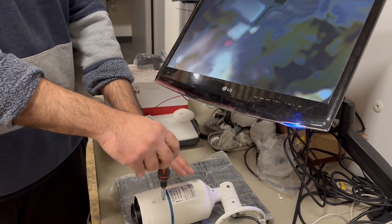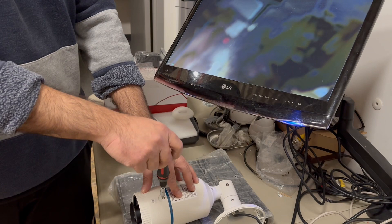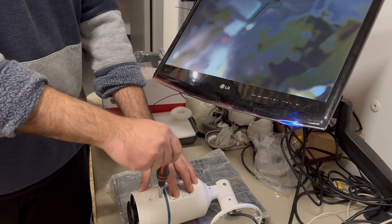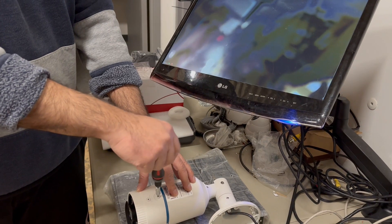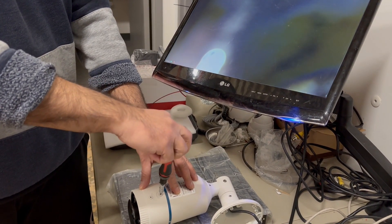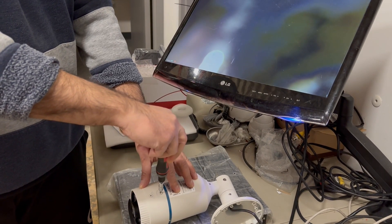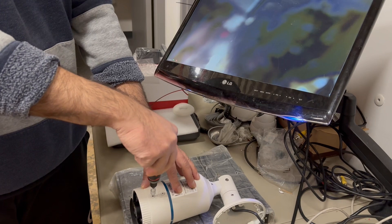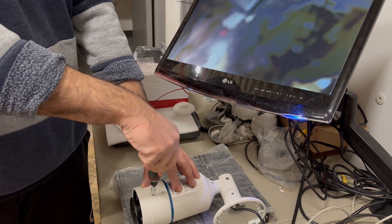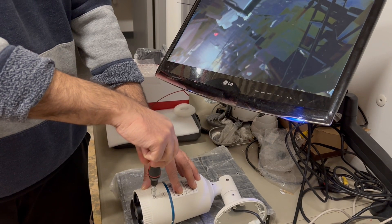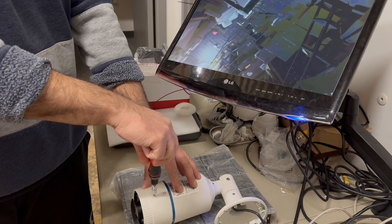We test every single camera here under video surveillance before we ship it to you to make sure it's working. Now that I have did a clockwise turn and I'm trying to focus it I'm not getting a good picture. So what you need to do is go back to the zoom, go counterclockwise more, and find the good sweet spot that your zoom lines up with your focus.